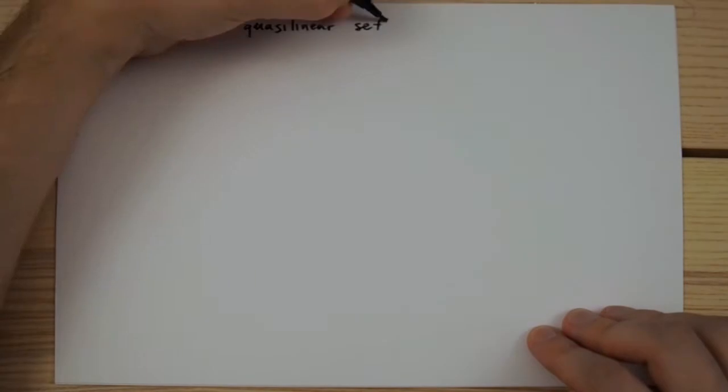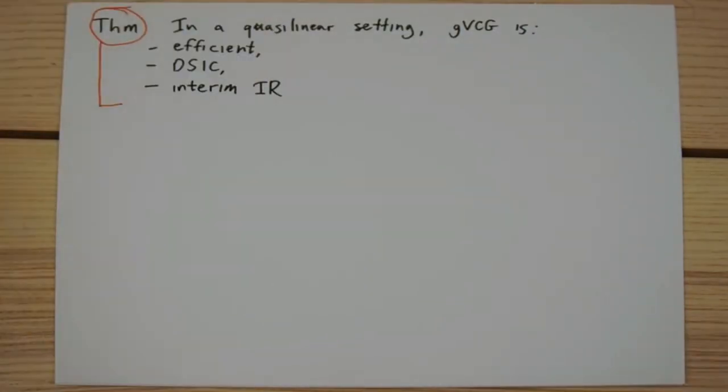We will now state and prove the properties of the generalized VCG mechanism. In quasi-linear settings, the generalized VCG mechanism implements the efficient allocation in dominant strategies, and it is also interim individually rational, which is a new property compared to regular VCG.